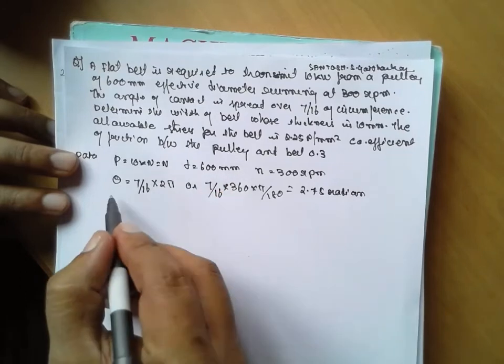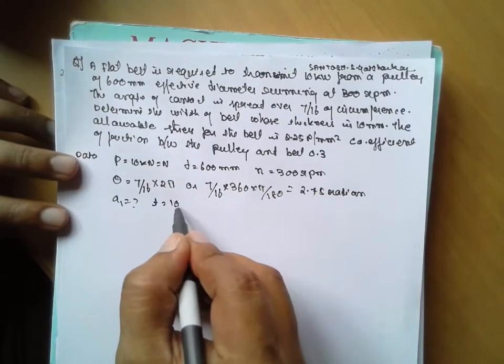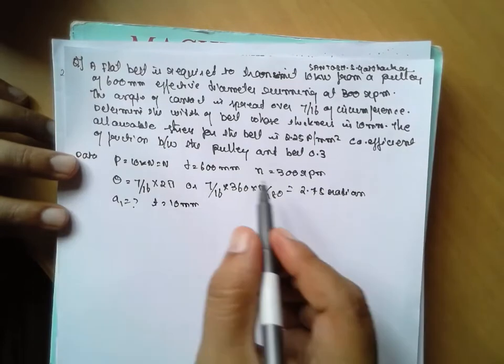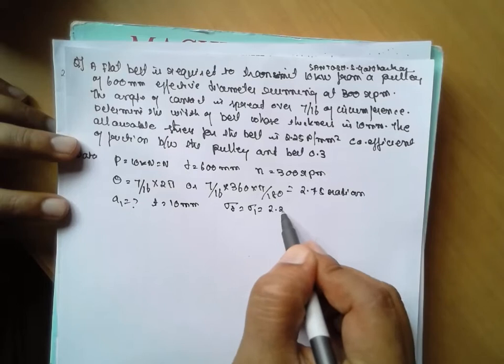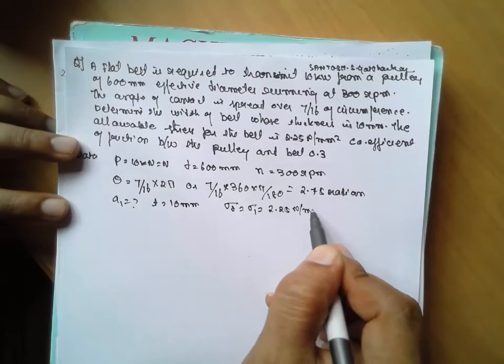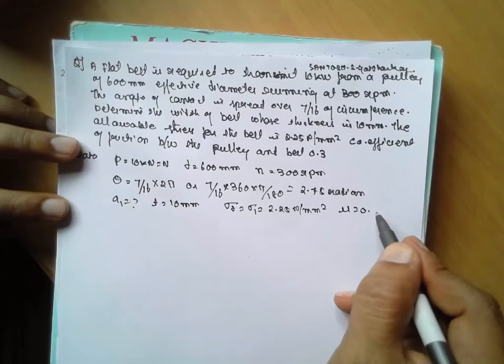Determine the width A, we have to find out that width. Thickness t is given as 10 mm. Allowable stress sigma d is 2.25 N per mm square, and mu is given 0.3.